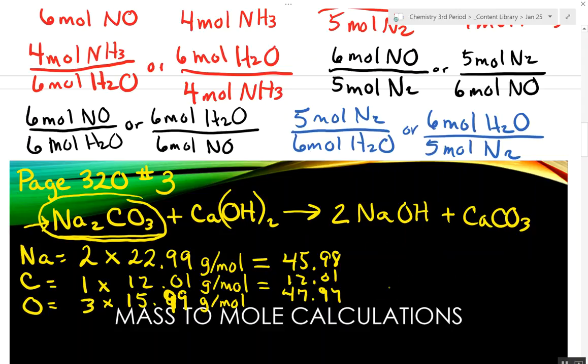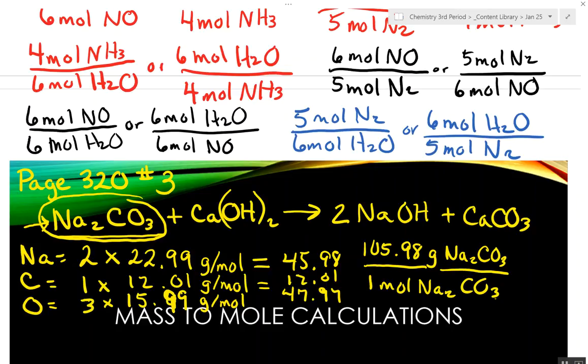So it's going to be one hundred and five point nine-eight grams of Na2CO3 per one mole of Na2CO3. And this is the key. You have to write all the units out, including what substance you have.